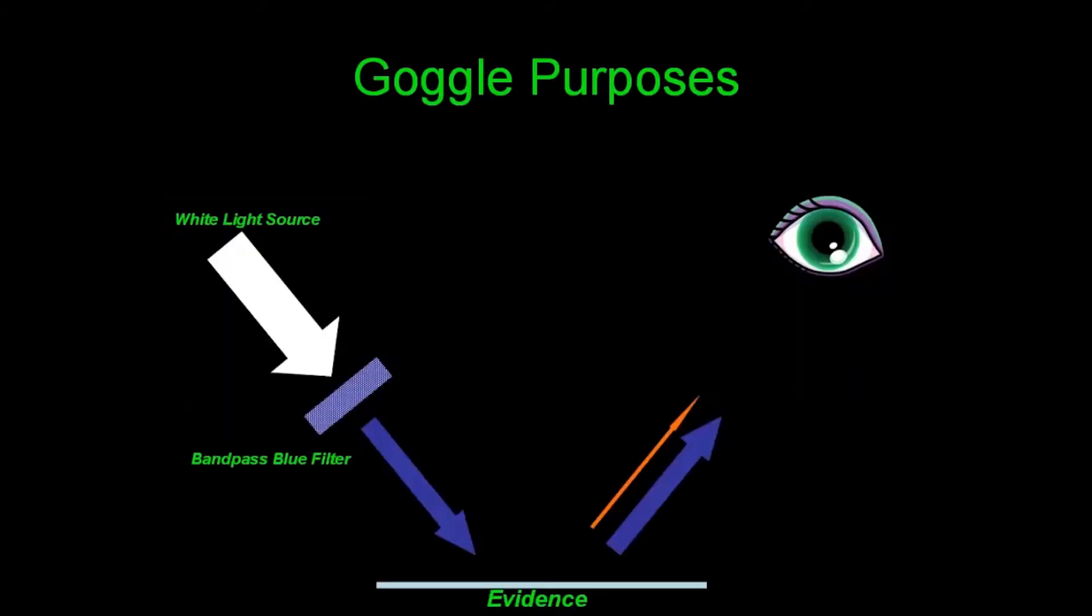The goggles serve two purposes. One, to block the reflected light, and two, to allow you to visualize the fluorescence.